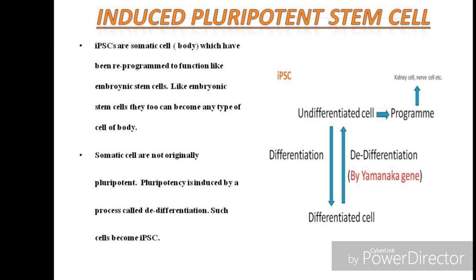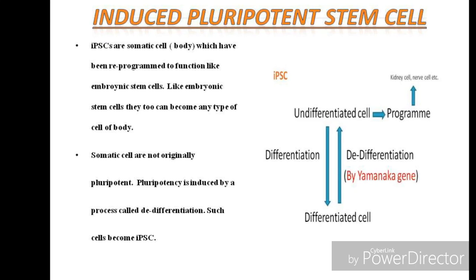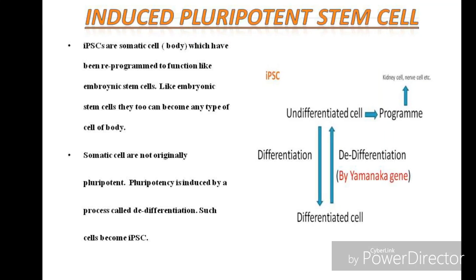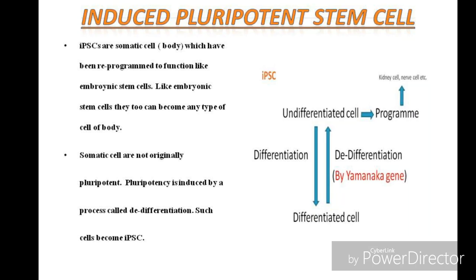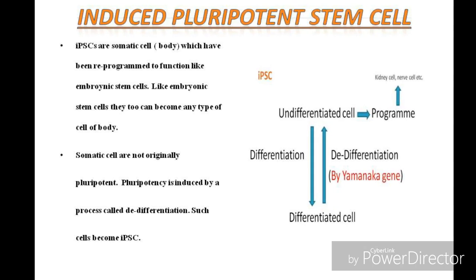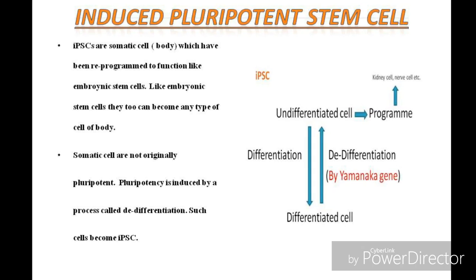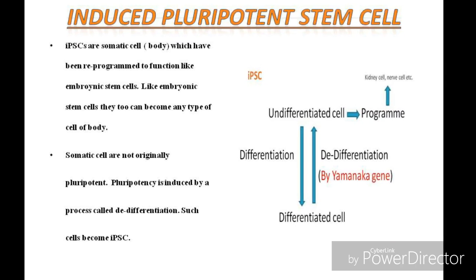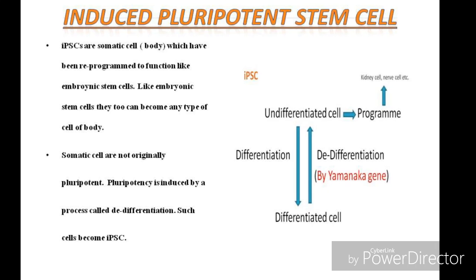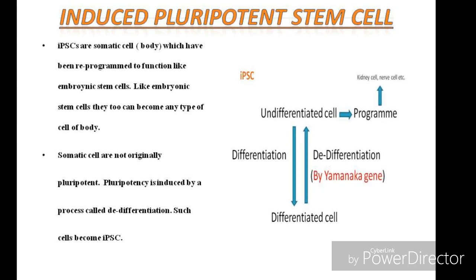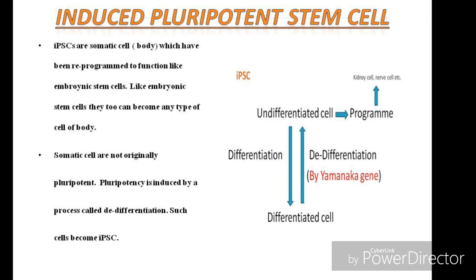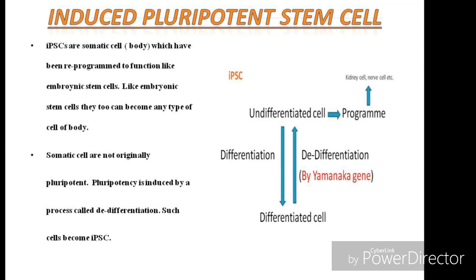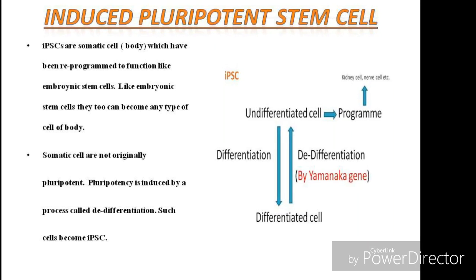Another type of stem cell is the induced pluripotent stem cell, or iPSC. Somatic cells are not originally pluripotent; pluripotency is induced by a process called de-differentiation. As shown in the diagram, any differentiated somatic cell — already assigned to a function — when induced by certain transcription factors coded by a gene called the Yamanaka gene, forms an undifferentiated cell mass very similar to embryonic stem cells that can be programmed to form various cell types.